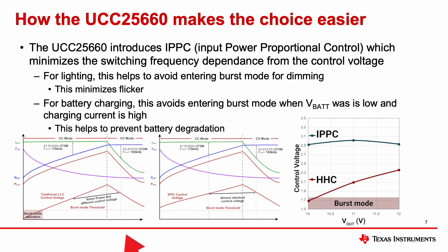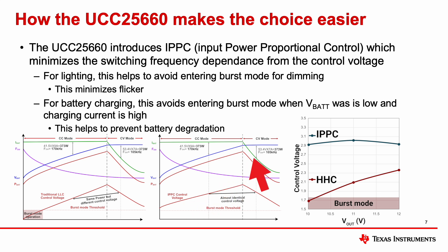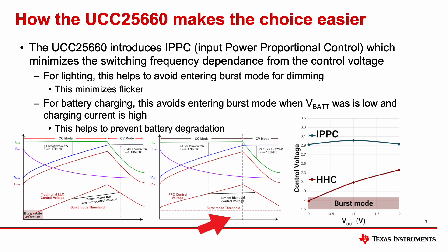With the same battery charging profile, with IPPC control, at the same power level you have the same control voltage. So 373 watts in the constant current region has the same control voltage as 373 watts in the constant voltage region. This makes it much easier to avoid entering burst mode with low V-BAT.